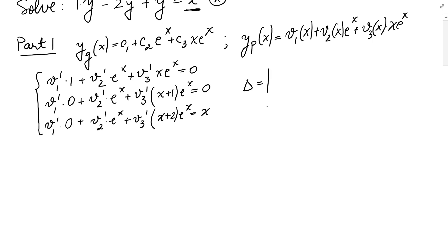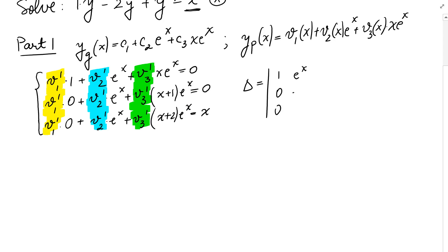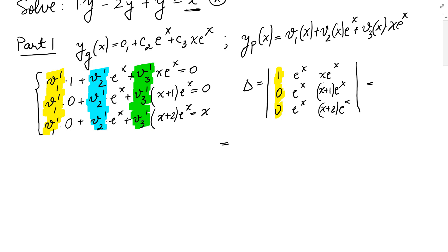Based on this information, we calculate delta, which is the Wronskian determinant made from the coefficients of v1', v2', and v3'. So we get the matrix with entries 1, 0, 0 in the first row; e^x, e^x, e^x in the second row; and x e^x, (x+1)e^x, (x+2)e^x in the third row. We can solve this determinant by expanding along the first column because it contains so many zeros, making it much easier.